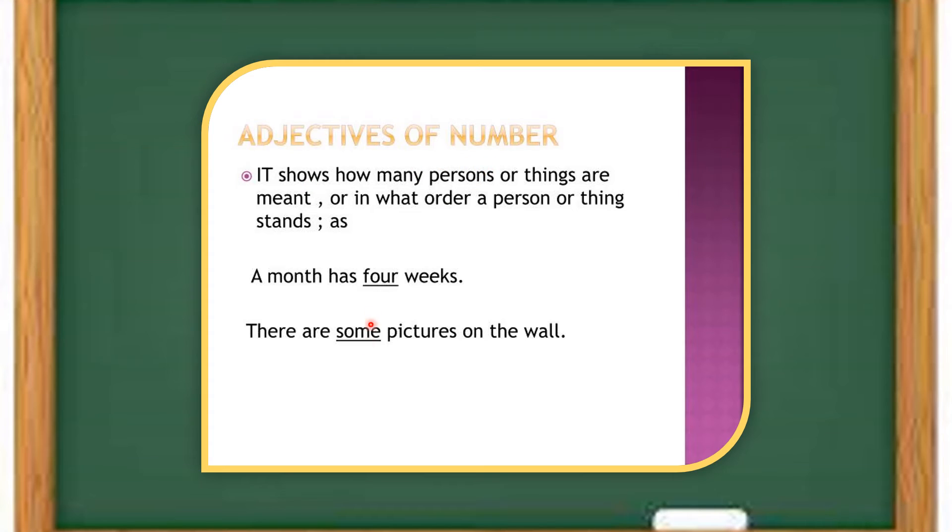So the adjective of number could be either cardinal or it could be ordinal. For example, I want one apple. Here, one apple is a cardinal adjective. Whereas, I want the third apple on the branch. Here, the third is an ordinal adjective.